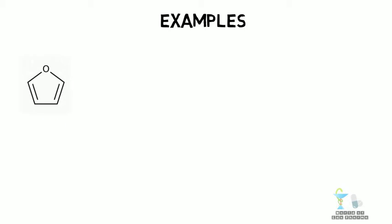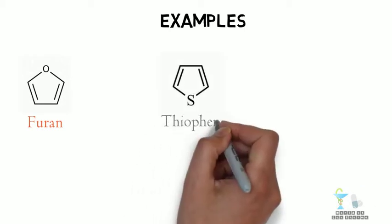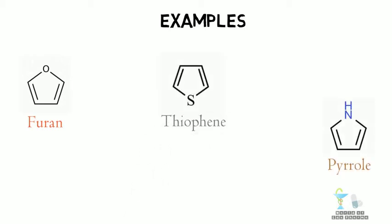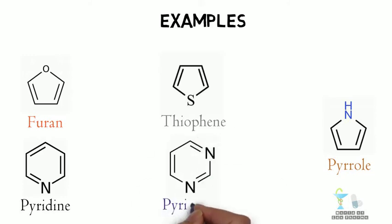Some examples of heterocyclic compounds are furan, thiophene, pyrrole, pyridine, and pyrimidine.